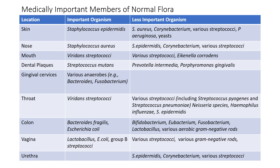This table shows the important normal flora and their locations. For example, the skin has the most important organism as Staphylococcus epidermidis, while other less important organisms include Staph aureus, Corynebacterium, various streptococci, Pseudomonas, and yeast. On the nose, the most important normal flora is Staphylococcus aureus, while others include Staph epidermidis, Corynebacterium, and streptococci.